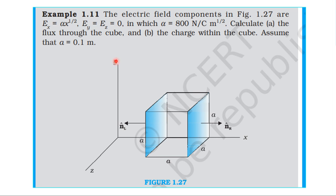This is from a textbook on the topic of electric charges and fields, Example 1.11. The electric field is given as Ex equal to alpha x to the power one-half, Ey equal to zero, Ez equal to zero, where alpha equals 800 Newton per Coulomb per root meter. Calculate: first, the flux through the cube, and second, the charge within the cube, where the side a equals 0.1 meter.